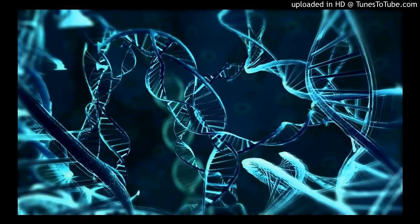Bacteriophages have a relatively different type of capsid — a complex capsid — which is an amalgamation of both icosahedral and helical structures. This is designed because bacteriophages need to inject their DNA rather than fully entering the bacterial cell. They have hollow tube-like tails called tail fibers, which attach to the bacteria, pierce the cell wall using tail pins, and inject their DNA — working very similarly to a syringe.